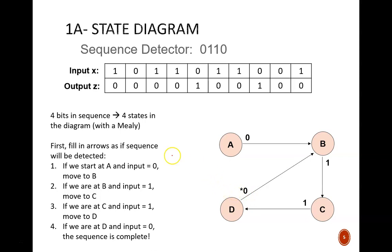I recommend first drawing the arrows used to successfully complete the sequence. Starting from A, an input of 0 is a successful first step, so we move to B. From there, a 1 moves us to C. From there, another 1 moves us to D.